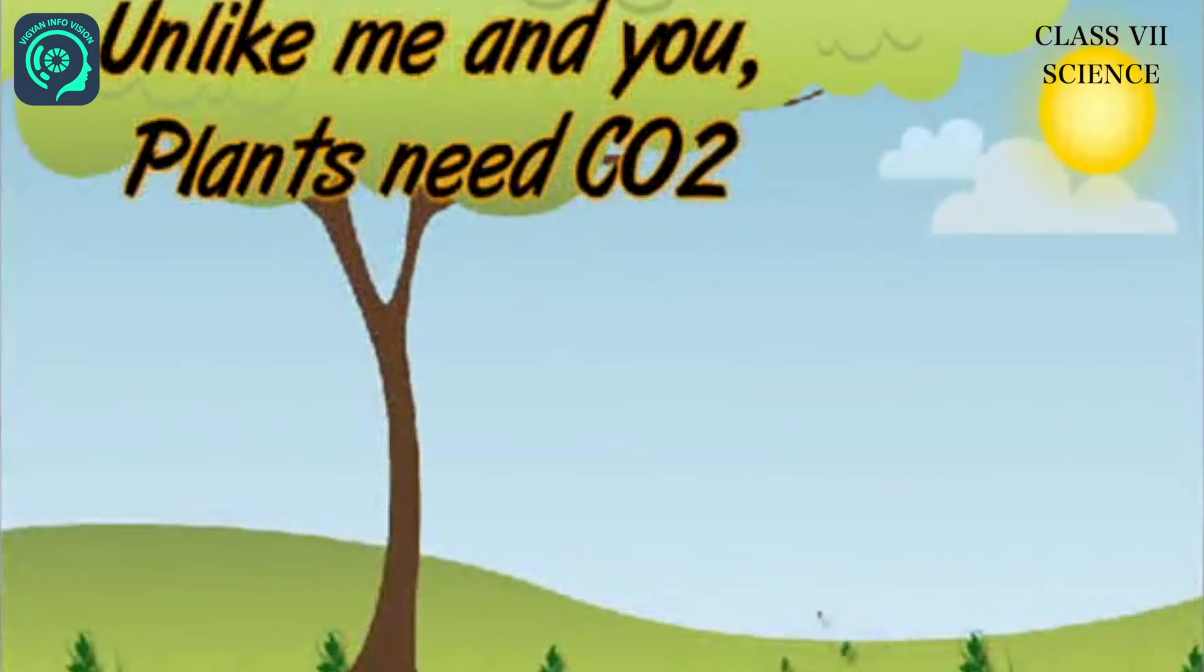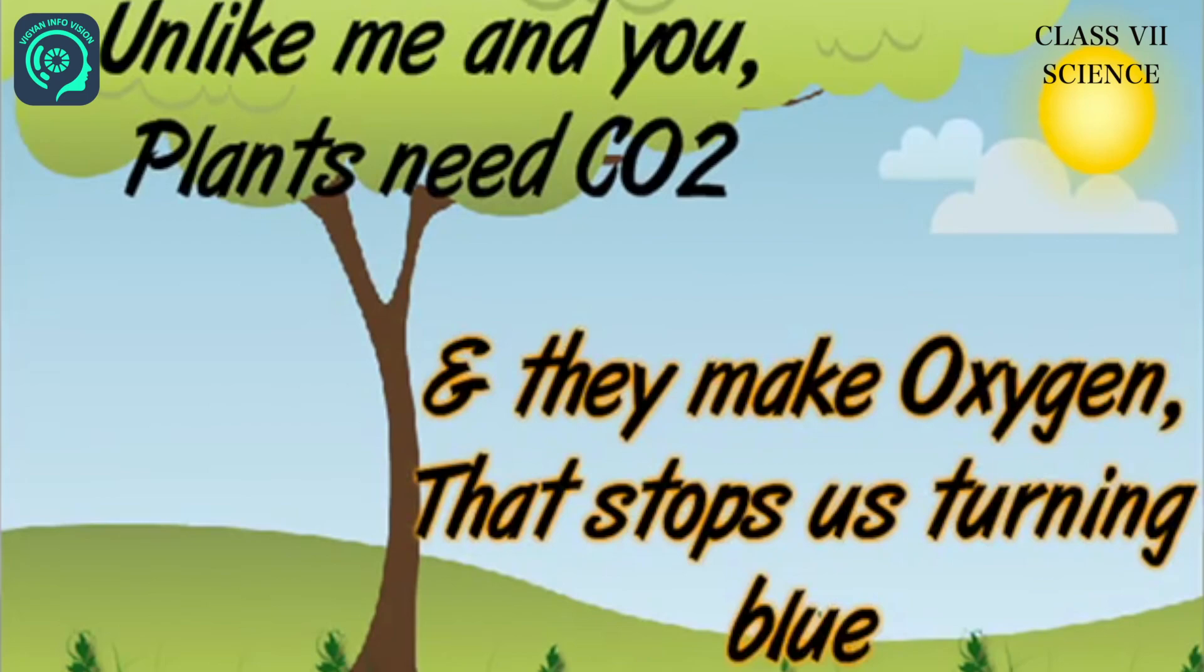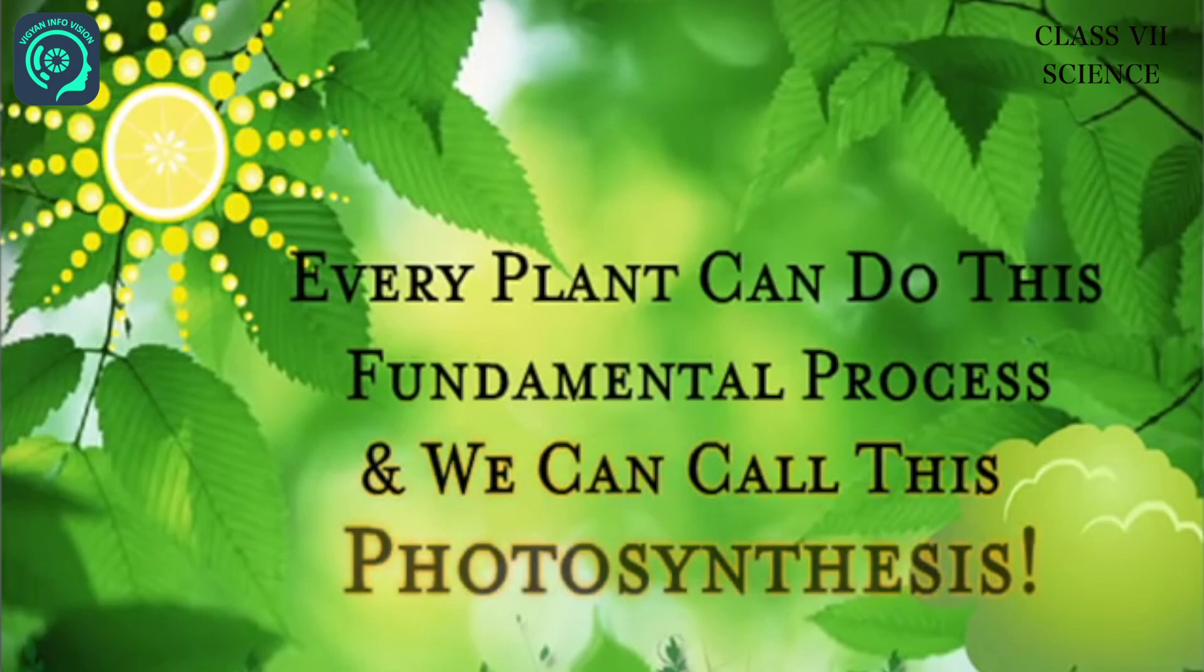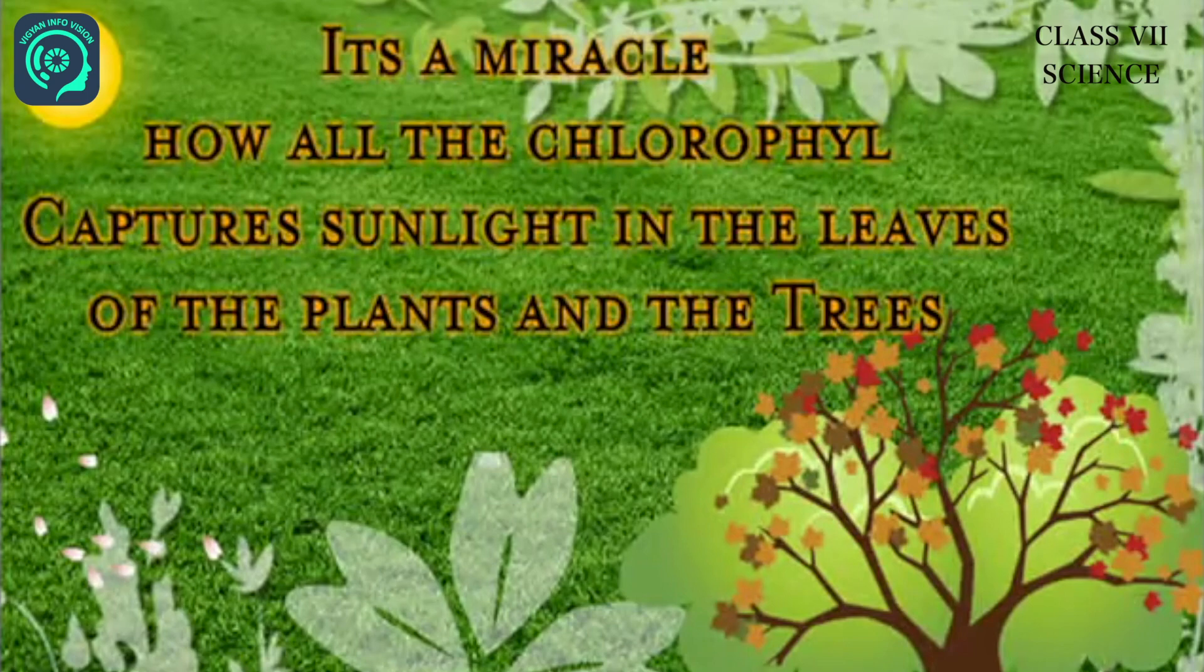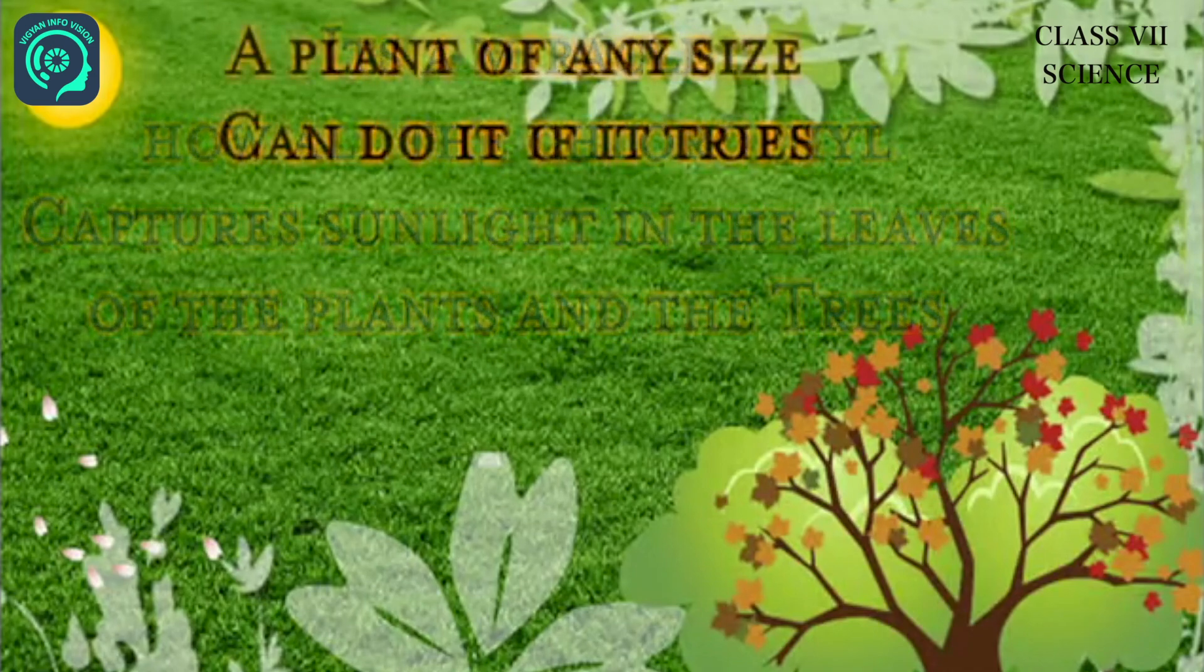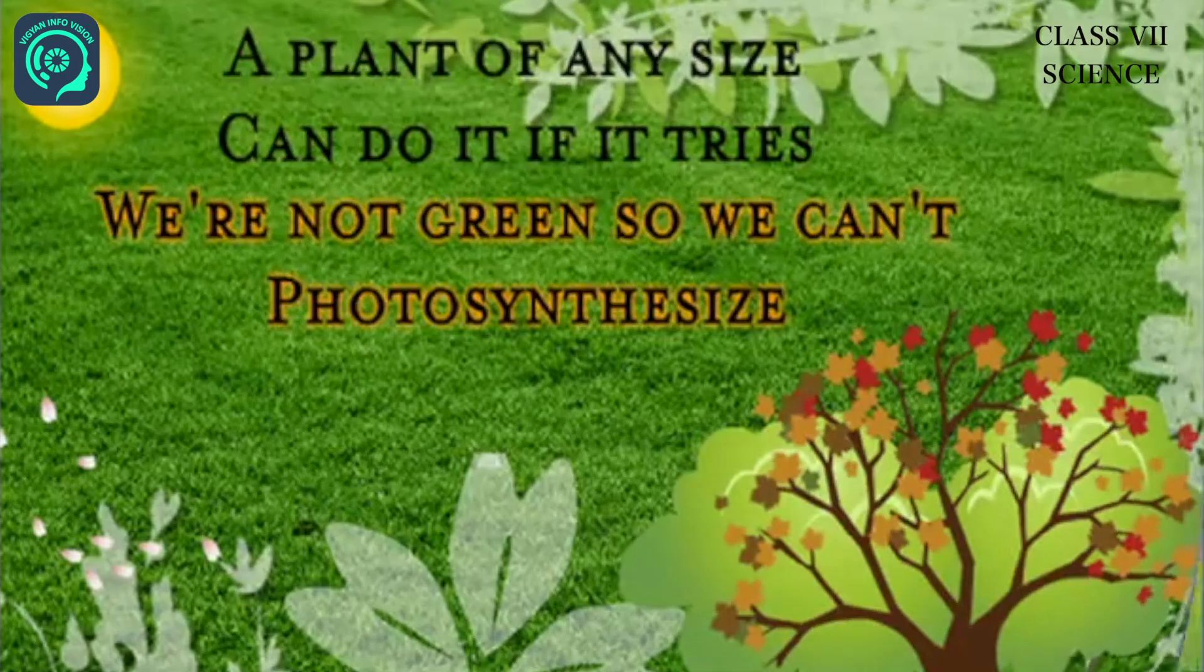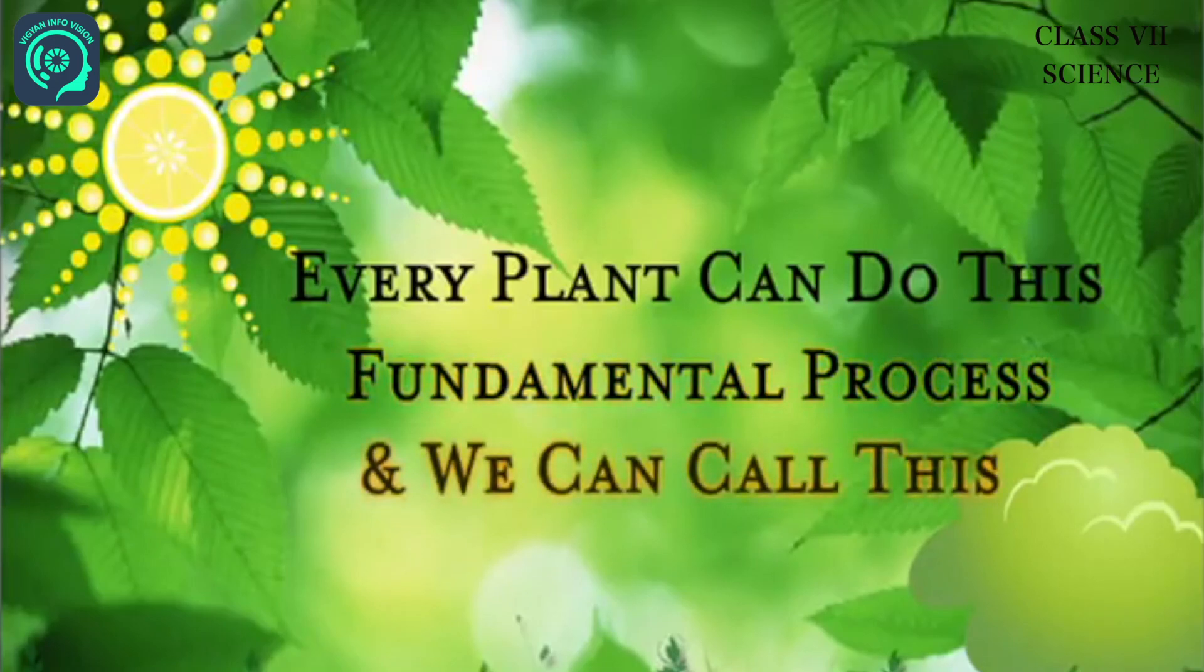Unlike me and you, plants need CO2 and they make oxygen that stops us turning blue. Every plant can do this fundamental process and we can call this photosynthesis. It's a miracle how all the chlorophyll catches sunlight in the leaves of the plants and the trees. A plant of any size can do it if it tries, but we're not green so we can't photosynthesize.